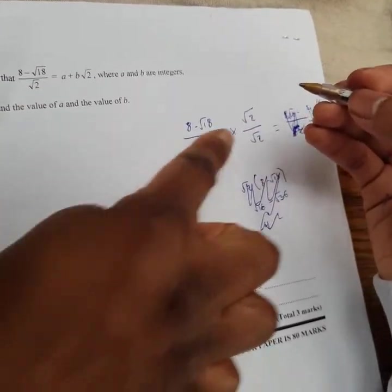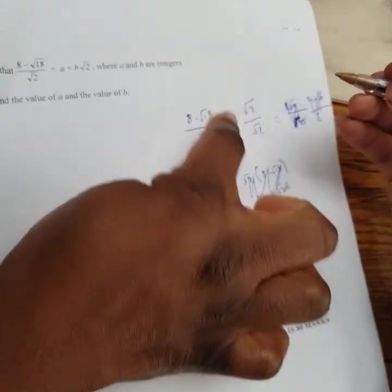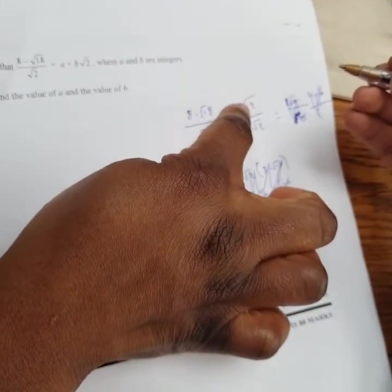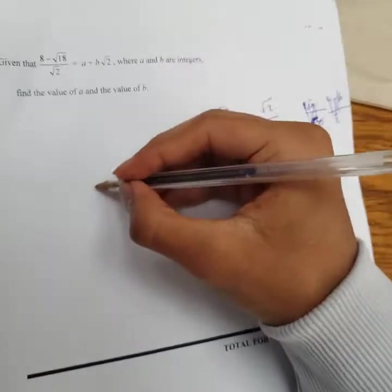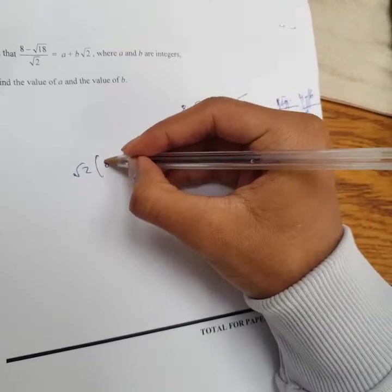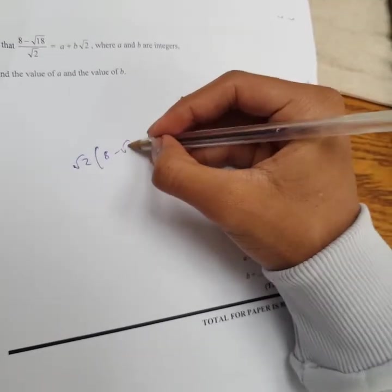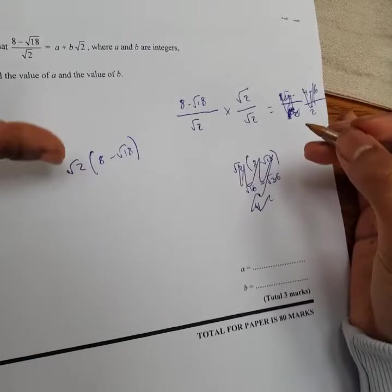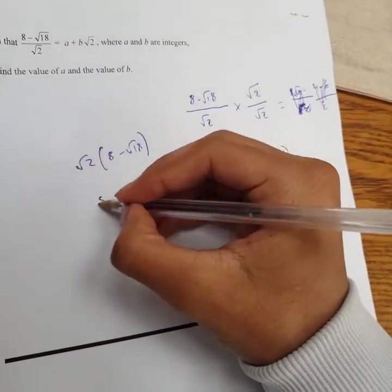So here, you want to write this out again, the way you wrote this. So you want to write root 2, so if you go on. So root 2, then 8, bracket. 8. Minus. Minus root 18. Bracket. So this would be 8 root 2. Yep. 8 root 2.